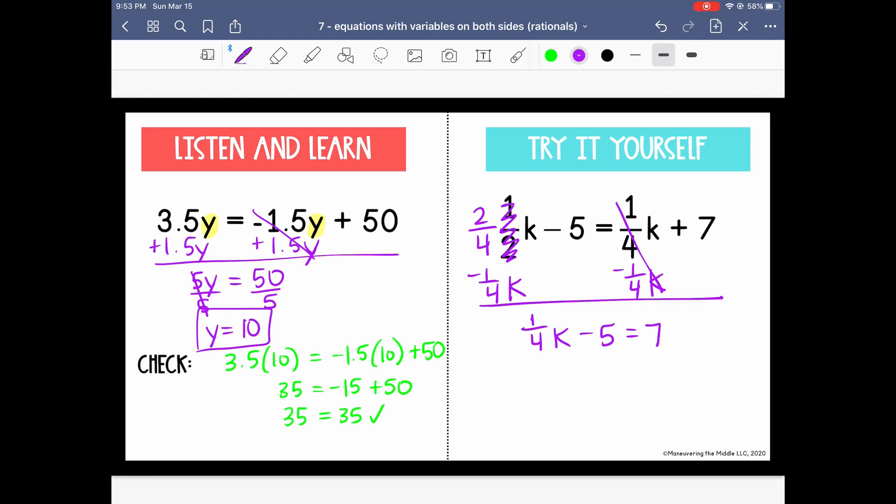So let's start solving for k. We'll add 5 to both sides. So now we have 1/4 k equals 12. 1/4 is being multiplied by k, so we need to divide both sides by 1/4. When we divide by a fraction, it is the same as multiplying by the reciprocal, meaning we need to switch the numerator and the denominator. So the reciprocal of 1/4 is just 4/1 or the whole number 4. So we know that k equals 48.